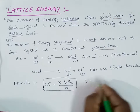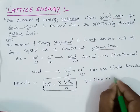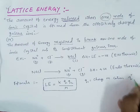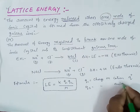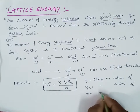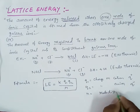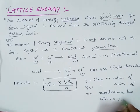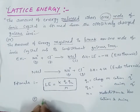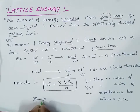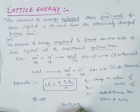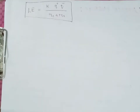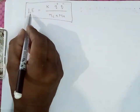Here q1 means the charge on the cation (written as q+), q2 means the charge on the anion (written as q−), and r equals the radius or distance between the cation and anion — for example, the distance between the nucleus of the sodium cation and the valence shell of the chloride ion. So r can be written as r_c plus r_a.